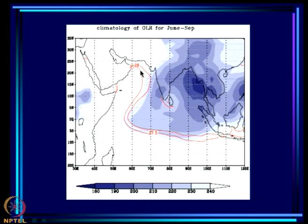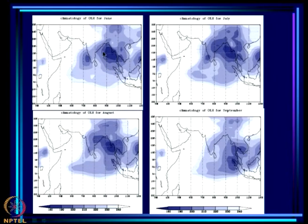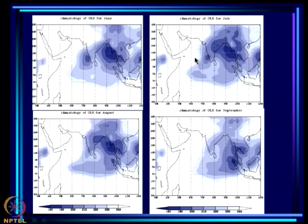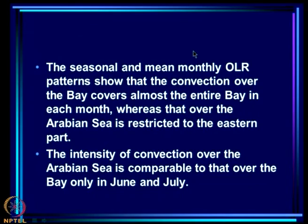The monthly patterns also show that almost the entire Bay is covered with deep convection. In the Arabian Sea, convection is much more prominent in June and July than in August and September, when there is hardly anything over the Eastern Arabian Sea. The seasonal and mean monthly OLR patterns show that convection over the Bay covers almost the entire Bay each month, whereas that over the Arabian Sea is restricted to the eastern part. The intensity of convection over the Arabian Sea is comparable to that over the Bay only in June and July.